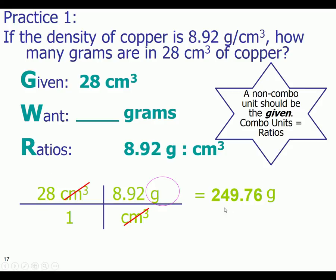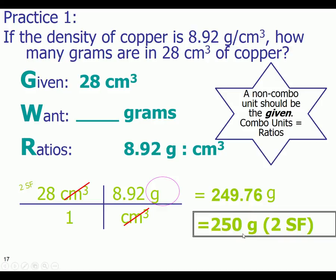And I count one, two, that four rounds up to a five because it's sitting next to a nine. And I'm not just going to write down 25 as my final answer. I'm going to write down 250. 250 no decimal because I want to make sure that it shows two significant figures in my final answer.